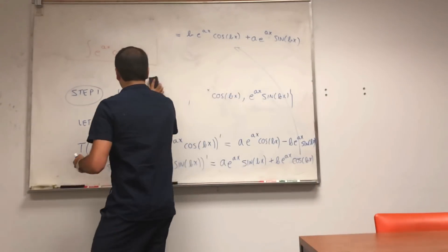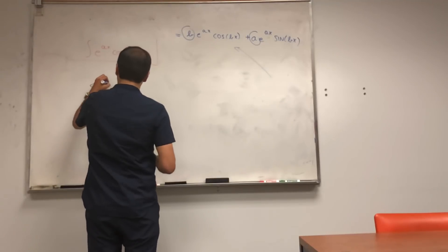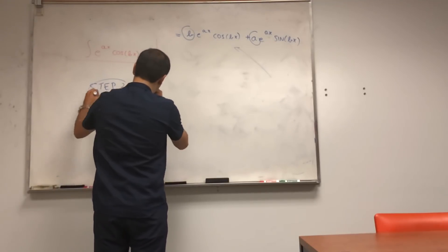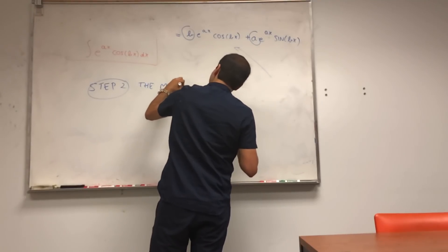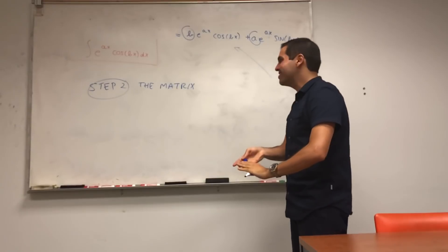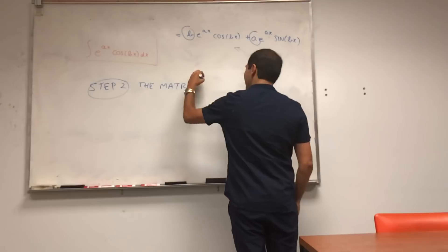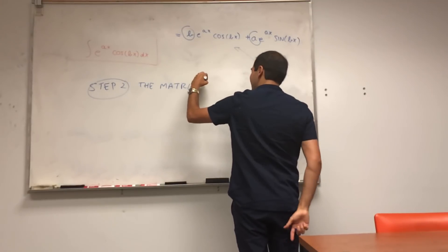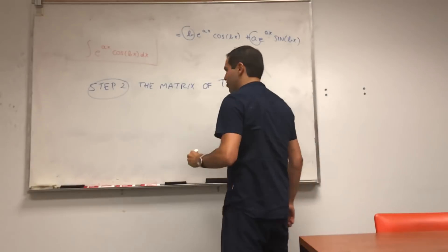And moreover, the cool thing is we can find a matrix of t. Therefore, what we get is the matrix of t, strictly speaking the matrix of t restricted to that subspace with respect to that basis given for w, which I'll just abbreviate as the matrix of t.